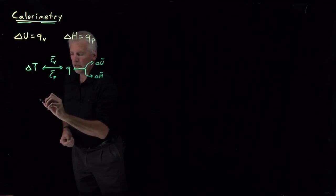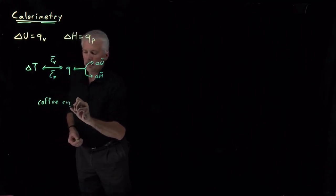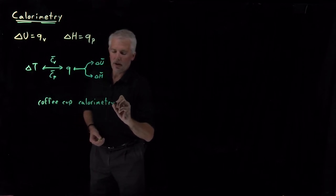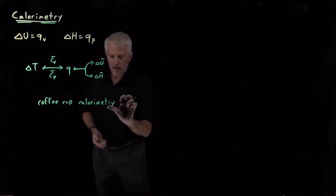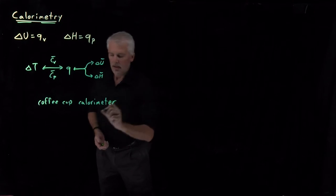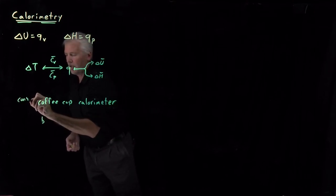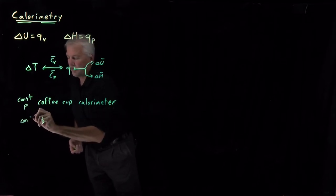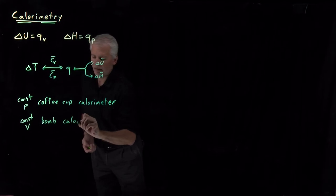Some examples of calorimeters that you may have seen, heard about, read about, or even used in a lab: there's a coffee cup calorimeter — the calorimeter being the device. This is the constant pressure example. The constant volume equivalent would be something often called colloquially a bomb calorimeter.